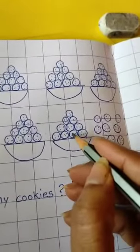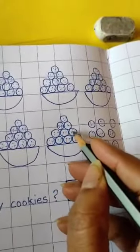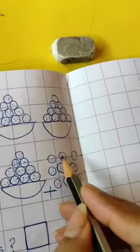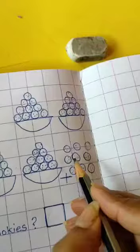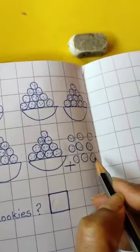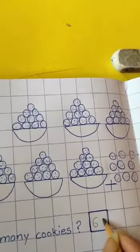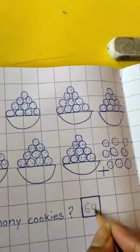50, 51, 52, 53, 54, 55, 56, 57, 58, 59, 60, 61, 62, 63, 64, 65, 66, 67, 68, 69. So we'll write inside the box 69.